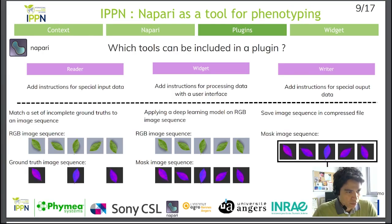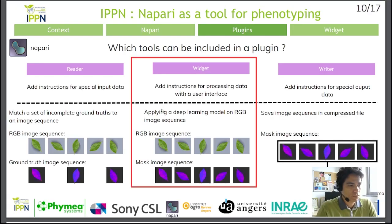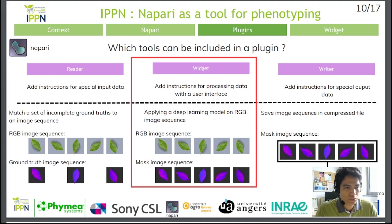For the Writer, a user may require a very particular output. It is possible to obtain data either in a compressed file or in a particular image format. For example, a user can integrate code into a Writer to get images in a compressed file — such as saving masks in a compressed file. The second part of this video will focus only on the Widget tool, so we won't talk about the other tools.